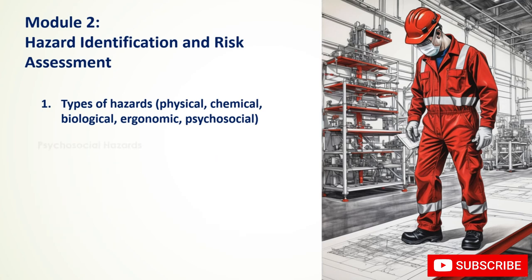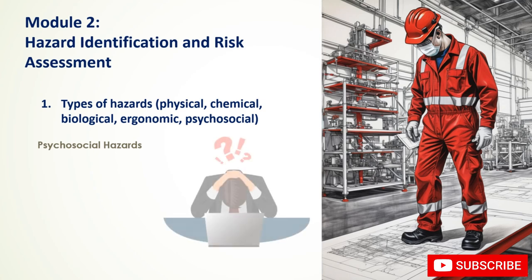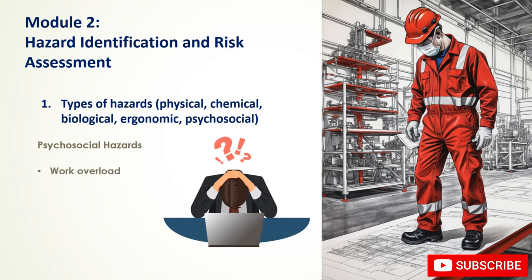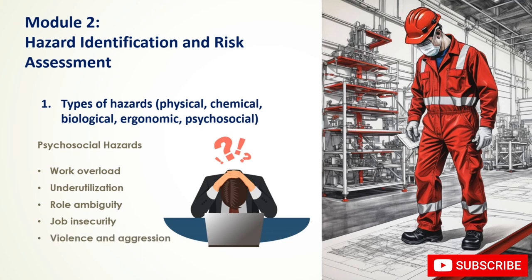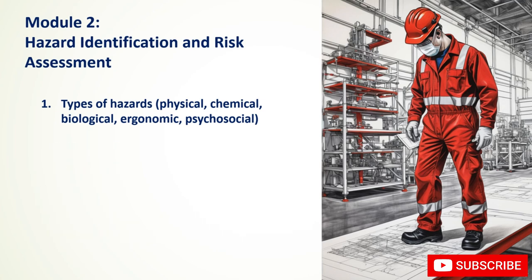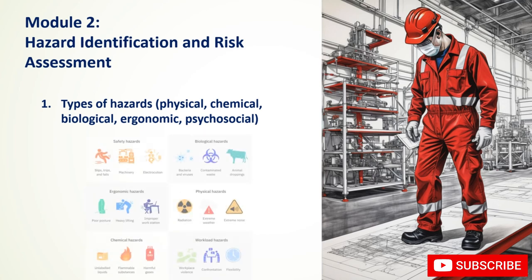Psychosocial hazards arise from work organization, management styles, and interpersonal relationships, and can affect mental health and well-being. Examples include work overload leading to stress and burnout, underutilization, role ambiguity, job insecurity, and violence or aggression in the workplace. Understanding these hazard types is essential for identifying and controlling workplace risks.